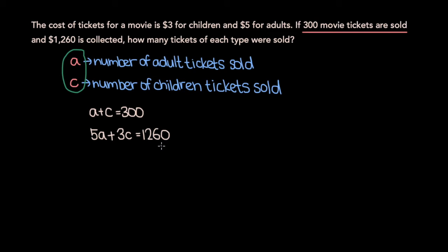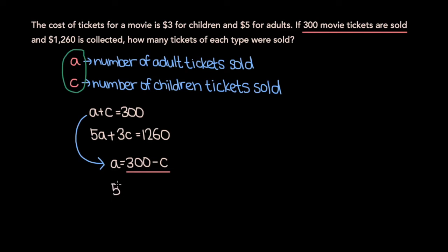So now we have a system of two equations with two variables, so we should be able to solve using either the substitution or elimination methods. I've made a video covering those methods in detail, linked in the top right. For this system, let's use the substitution method. Specifically, let's solve for A in our first equation — subtracting C from both sides gives us A equals 300 minus C. Now we can substitute 300 minus C for A in our second equation, giving us 5 times (300 minus C) plus 3C equals 1260.